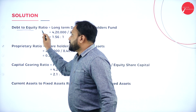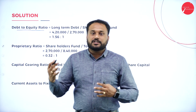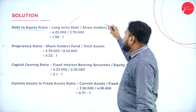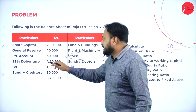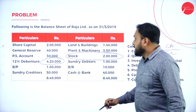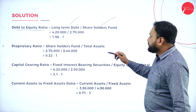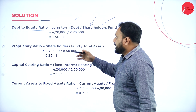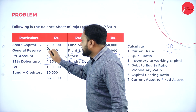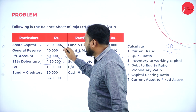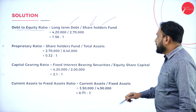Next is Debt to Equity ratio. The formula is Long Term Debt divided by Equity Shareholders' Fund. Here long term debt is given as 4,20,000 rupees. Shareholders' Fund is calculated as Share Capital plus Reserves and Surplus plus P&L account — that is 2 lakh plus 40,000 plus 30,000, giving 2,70,000. So Shareholders' Fund is 2,70,000.